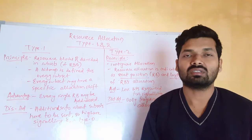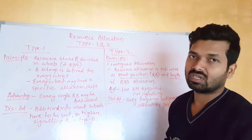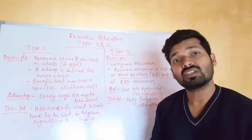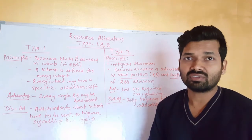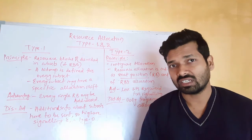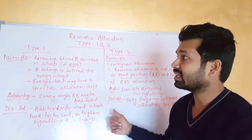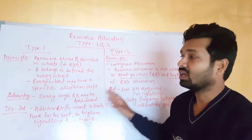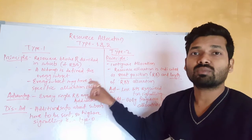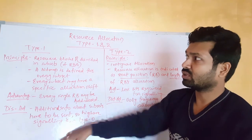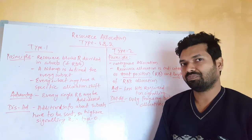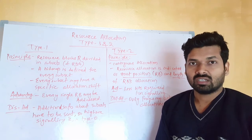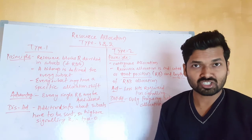That is all for the PDSCH resource allocation types in the LTE system. Hope you really liked and understood the session. Do also watch our previous session on resource allocation type 0 in our playlist. In the next session we'll take one example of type 1 — how subsets are created with resource block groups, how they are addressed, and how subset information is provided. Keep watching and sharing, don't forget to subscribe. Take care, till next time!